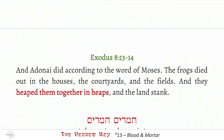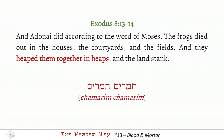Let's take a look at an example of a heap of something. Exodus 8:13-14 — we're looking at one of the plagues that the Egyptians experienced. It says, 'Adonai did according to the word of Moses; the frogs died out in the houses and courtyards and the fields, and they heaped them together in heaps, and the land stank.' This phrase 'heaped them together into heaps' is chamarim chamarim — they heaped heaps. There were multiple double heaps of dead frogs.